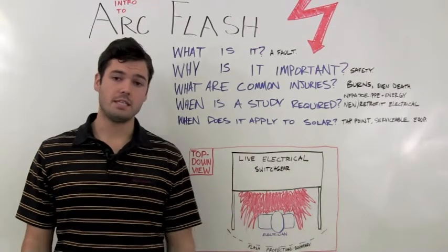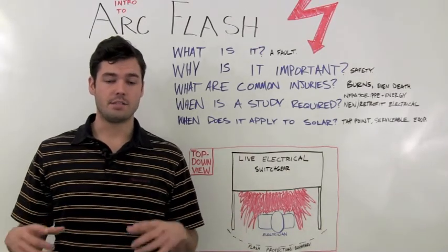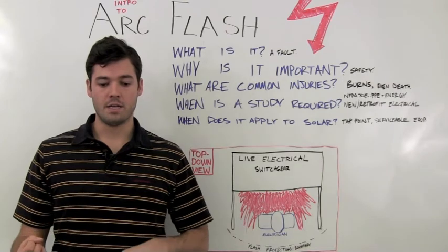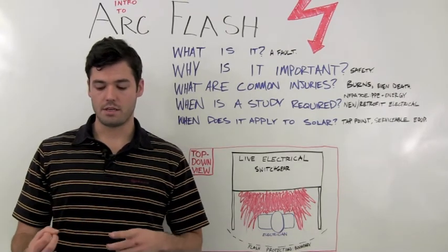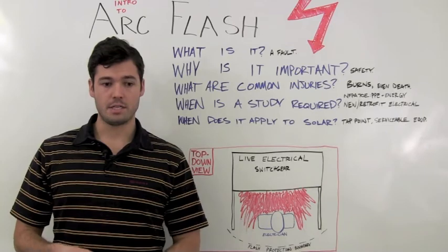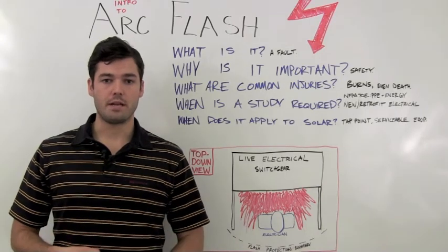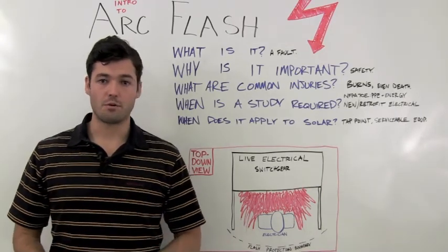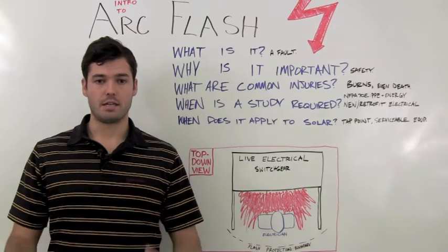The NFPA 70E states that these Arc Flash labels need to have the voltage that the equipment is operating under, the potential Arc Flash boundary, and then either the PPE rating or the Arc Flash hazard rating or the incident energy to be put on that label.